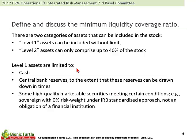The two categories of high-quality liquid assets are level one, which can be included without any limit, and level two, which can only comprise up to 40% of the stock. Level one assets are cash, central bank reserves, and some high-quality marketable securities.